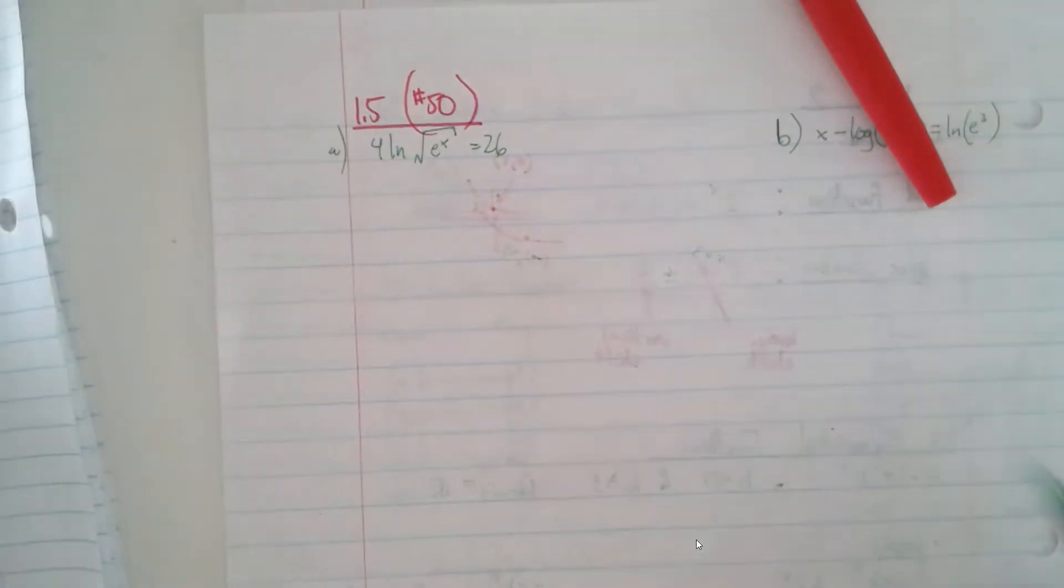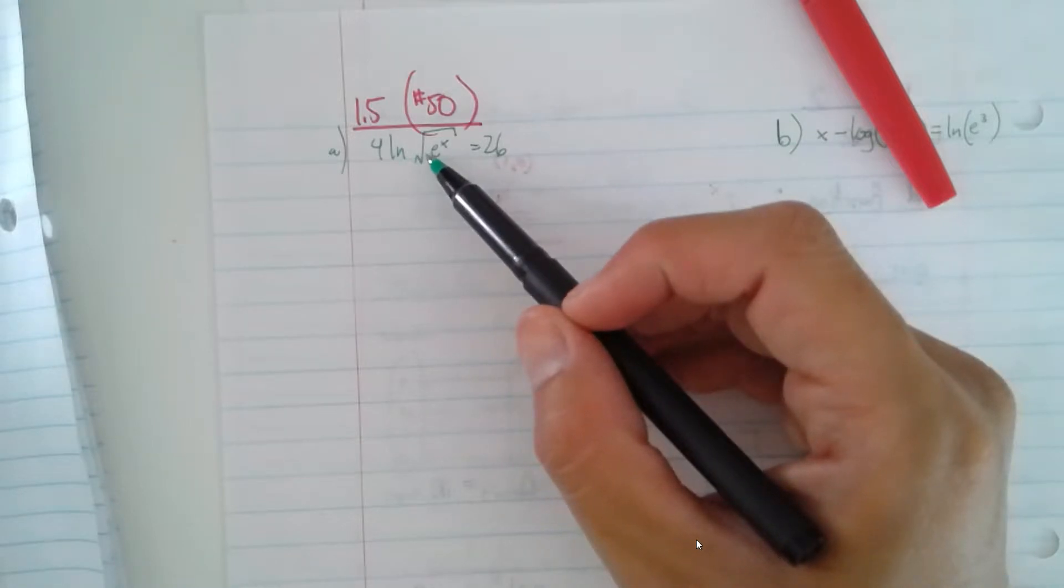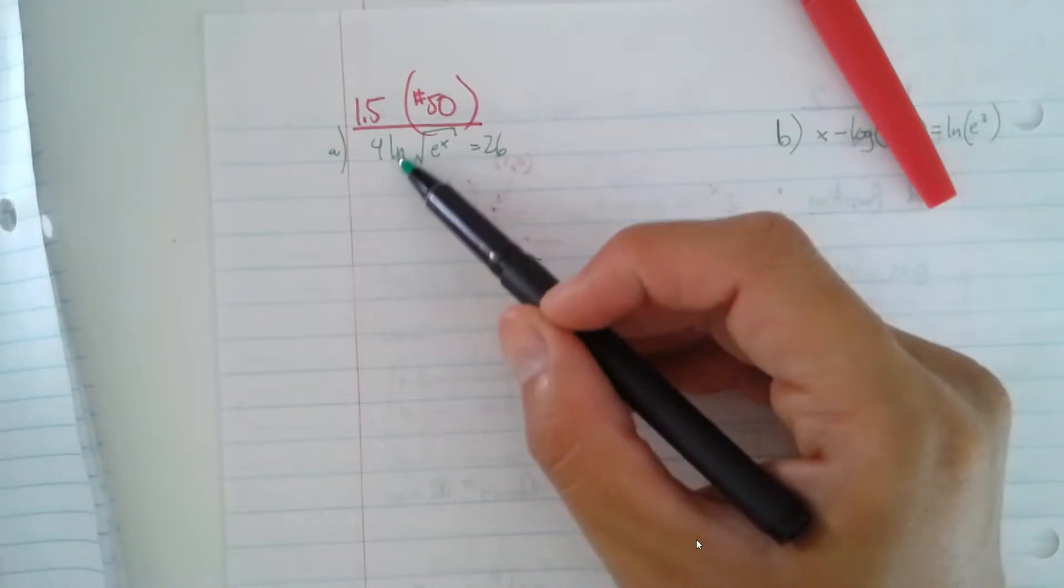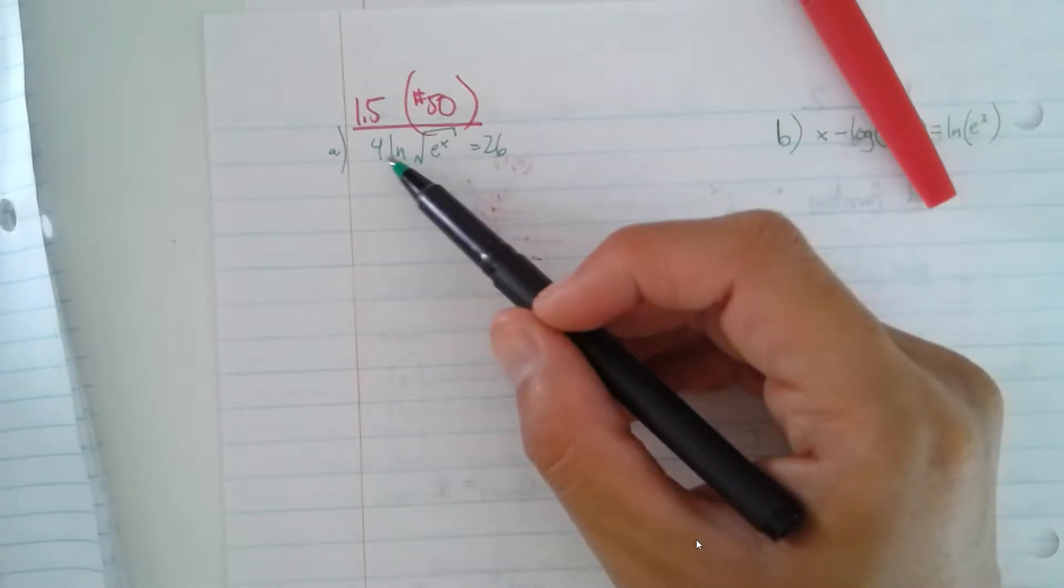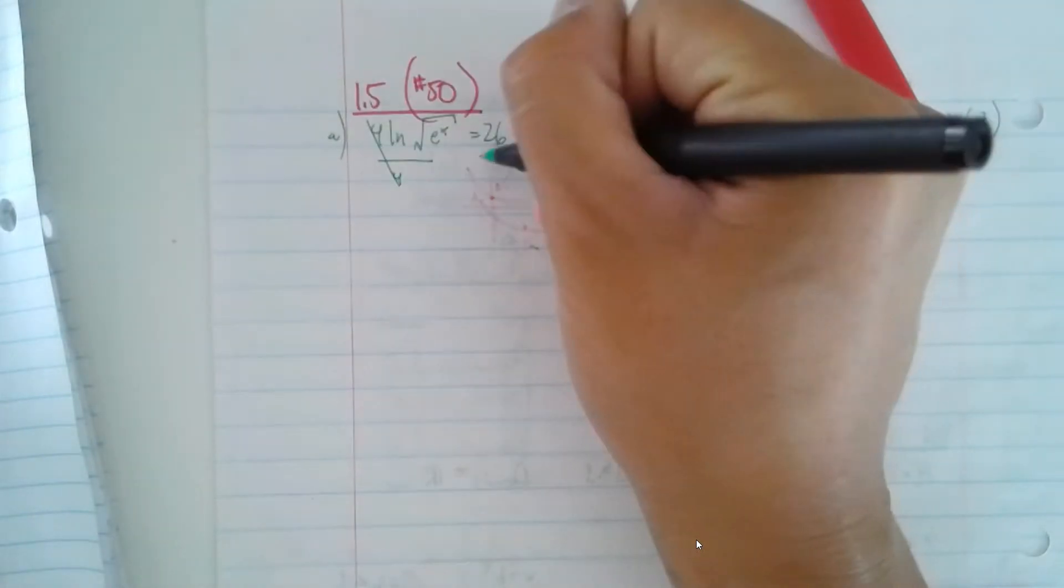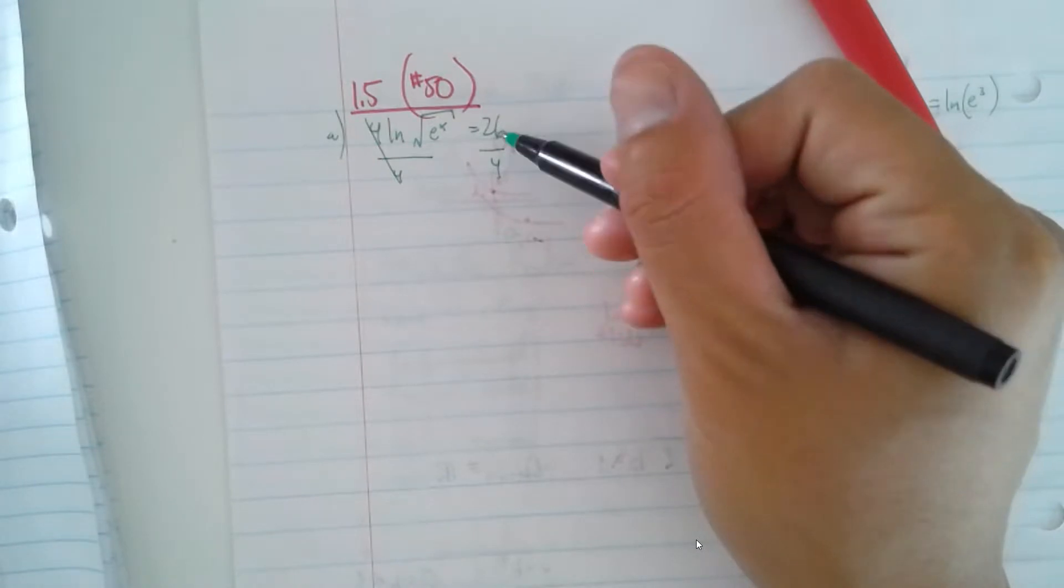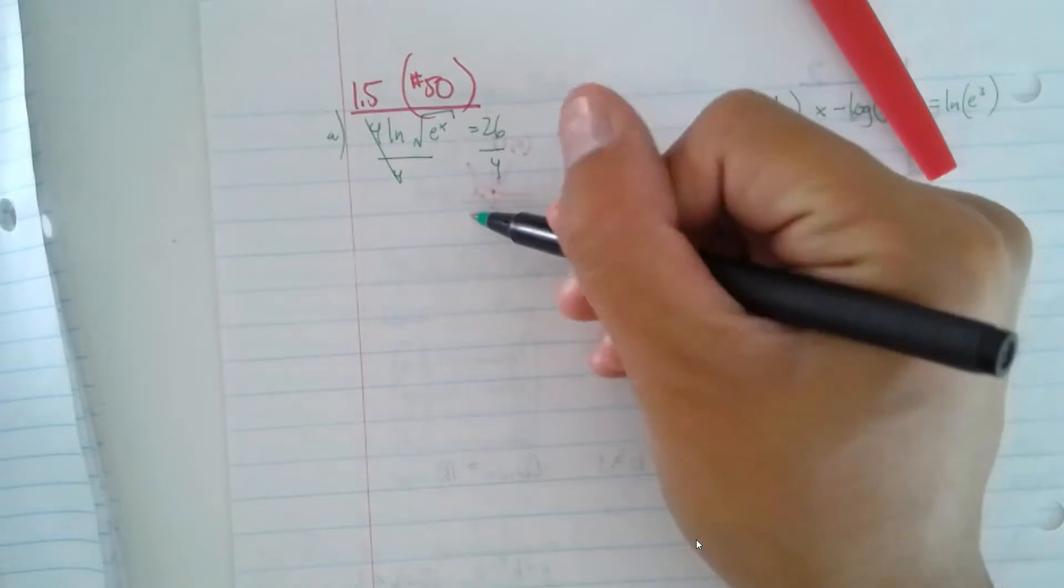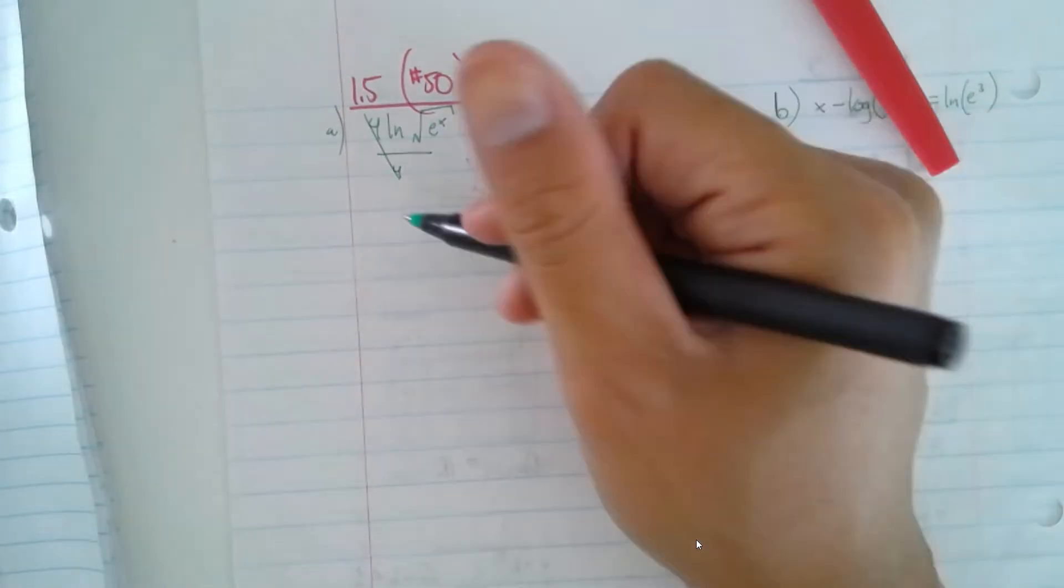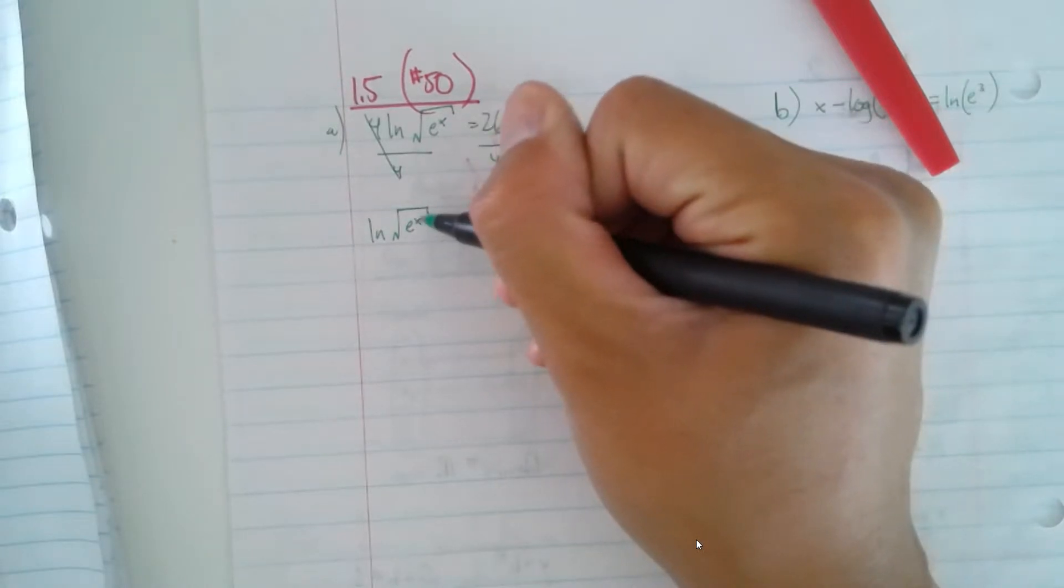So I would deal with what you have here by first isolating the natural log. Anything with logs or logarithms, I don't like the fact that it has a weird number coefficient in the front. So I'm going to divide both sides by 4. That's my first step. And I'm going to simplify this down. I know these are both divisible by 2, 26 and 4, so I'm going to divide the top and the bottom by 4, and that's going to be 13 divided by 2. I have the natural log of square root of e to the x there.